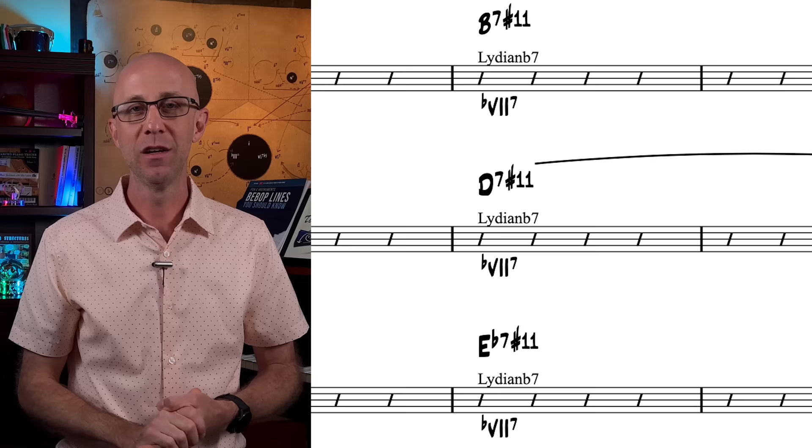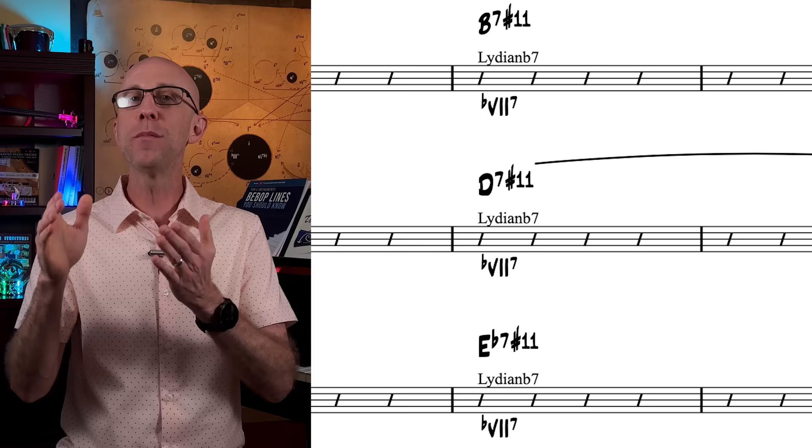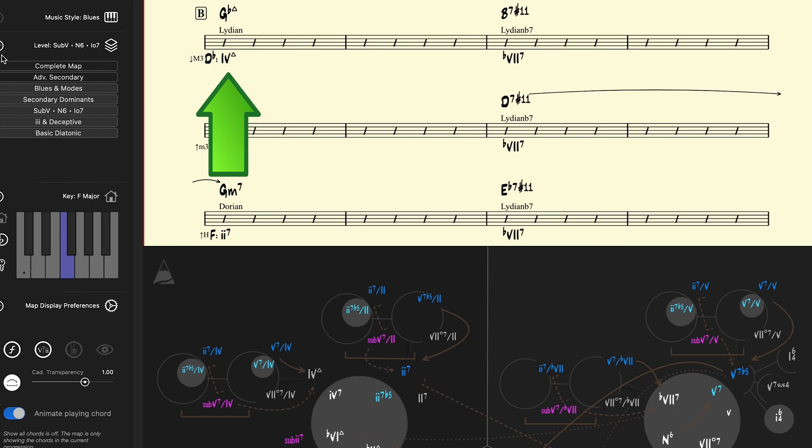So if we consider these three dominant chords in the B section as b7-7 chords, then they should all be paired with the Lydian b7 scale, becoming 7-sharp-11 chords. By reharmonizing the Gbmaj7 in the first measure of the B section with an Ebm7 Dorian, we now have an entire sequence of IIm7 to b7-7 chords.